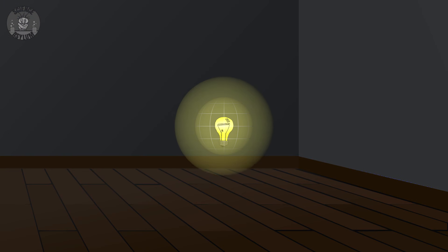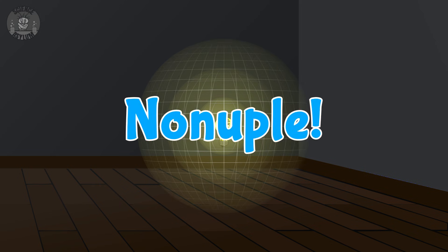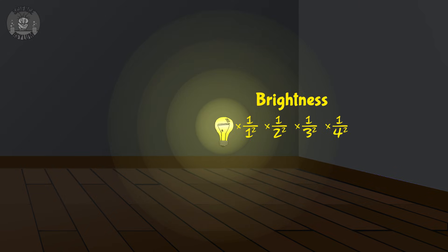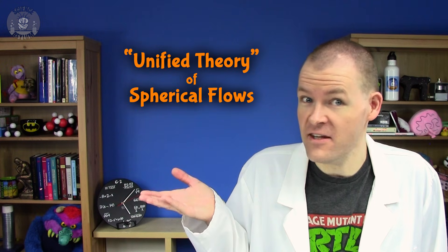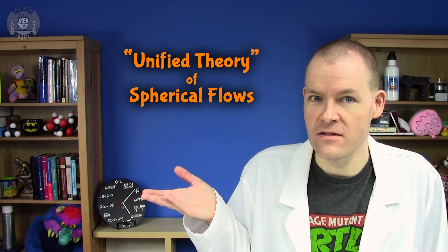If you double the distance, you quadruple the area. If you triple the distance, you non-uple the area and so on. The bigger the area, the dimmer the light, so we flip those multiples over. But this isn't just limited to light. It works for sound too and, frankly, anything we can imagine spreading out uniformly. You might call it a unified theory of spherical flows.